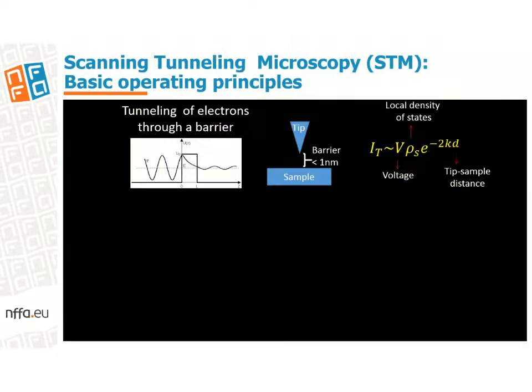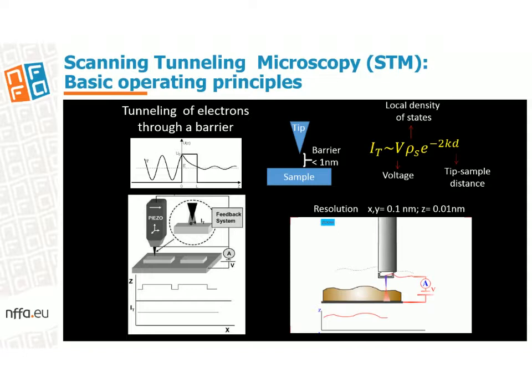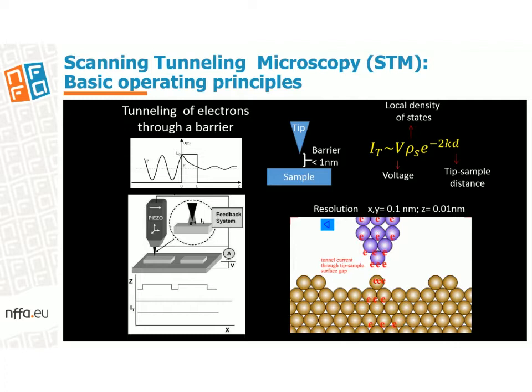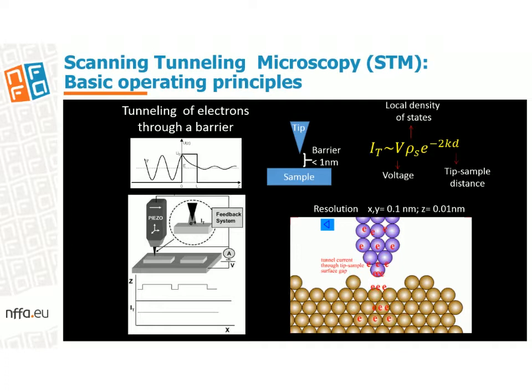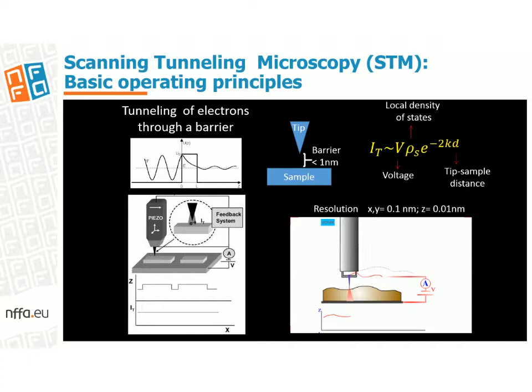STM is based on the quantum phenomenon of the tunnel effect, in which electrons can penetrate potential energy barriers. In this technique, a tunneling current can be established through a barrier gap by locating a sharp conductive tip at a few angstroms away from the sample and by applying a voltage between tip and sample. The tunneling current is directly proportional to the applied voltage, the local electronic density of states close to the Fermi level, and exhibits an exponential dependence with the gap distance, which is the key for the high sensitivity of the STM.